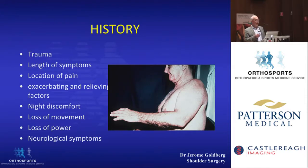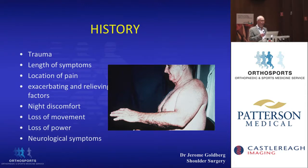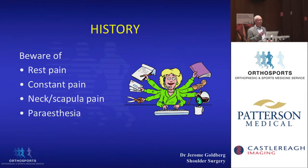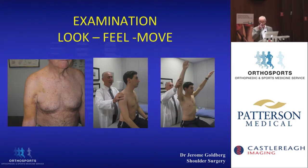We ask about trauma, length of symptoms, location of pain — which is usually about the lateral arm between the tip of the shoulder and the elbow — and exacerbating and relieving factors. Almost all patients get night discomfort, loss of movement, and loss of power. Always ask about neurological symptoms. Beware of pain at rest — as a general rule, shoulder pain occurs with activity and at night. Be wary of constant and unremitting pain, symptoms referable to the neck or scapula, and paraesthesia in their arms.